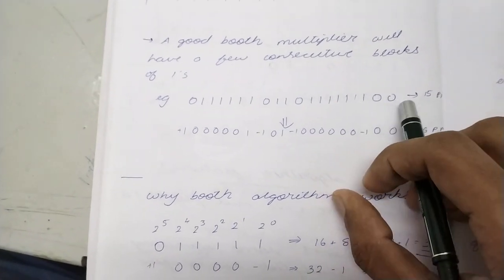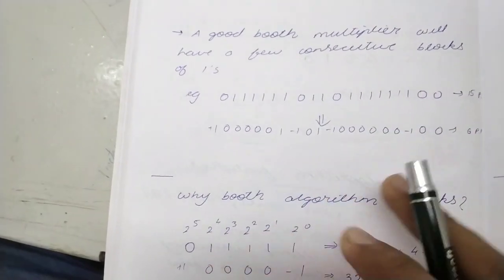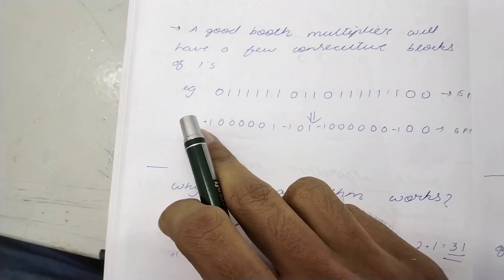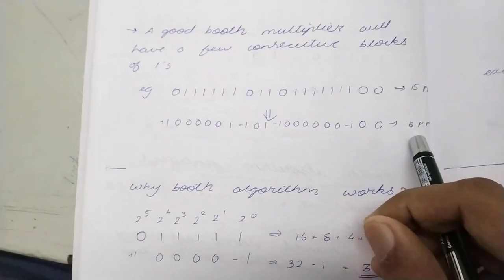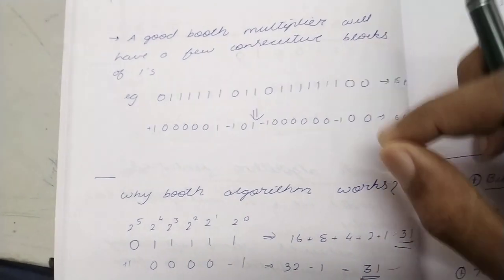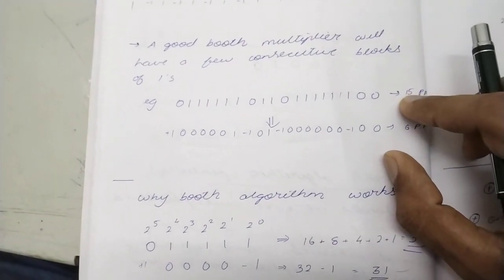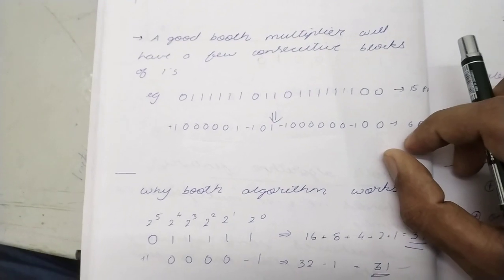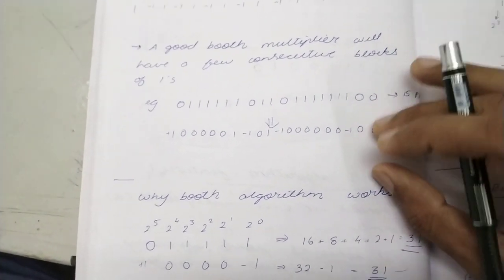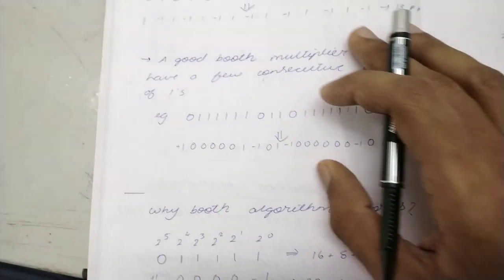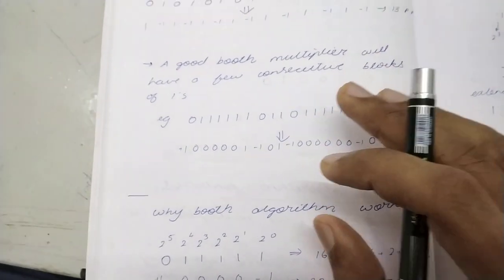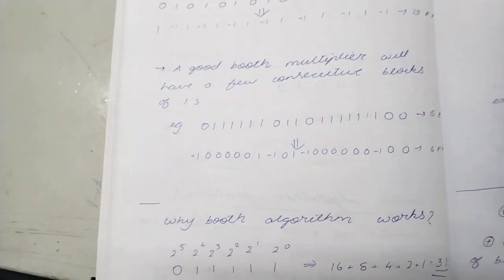All these zeros will create no partial products. So see, here when there are 15 partial products for these ones, here only some 1 and minus 1 are there. This is just 6 partial products. Look at the difference. In normal multiplication, you will have to add 15 partial products. Here, you just add 6 partial products. That is a hell of a difference. So that is an example for a good Booth multiplier.